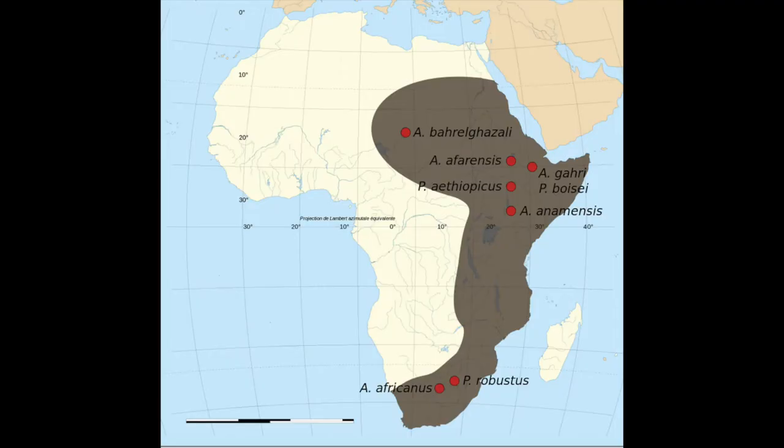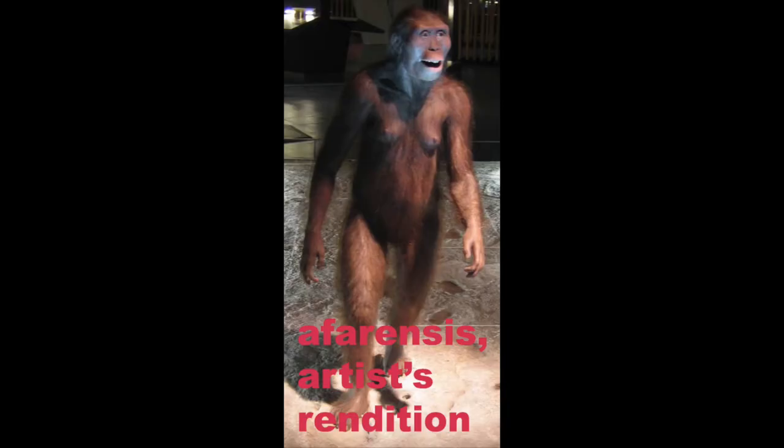So what is Australopithecus? Australopithecus is a group of extinct related species who lived in eastern and southern Africa roughly between 2 and 4 million years ago. They were upright walkers — bipedal like us — but in many other ways quite ape-like. Their brains were only slightly larger than those of modern great apes like chimpanzees and gorillas. But there is something especially significant to human beings about Australopithecus.